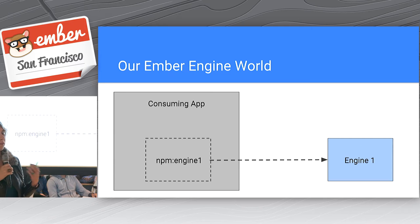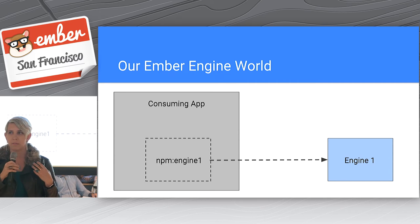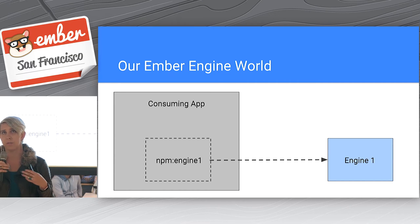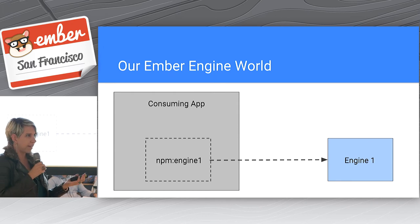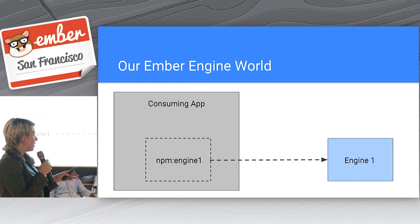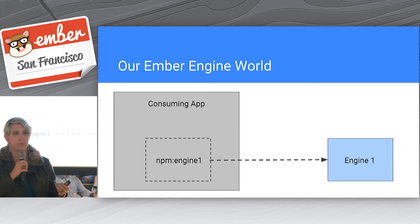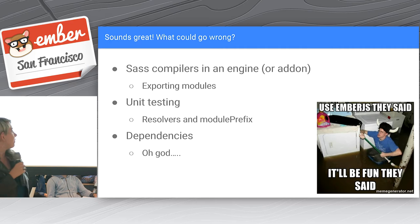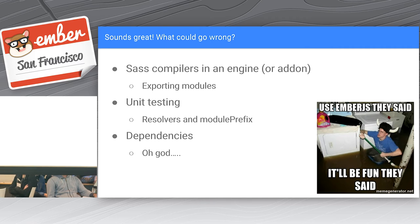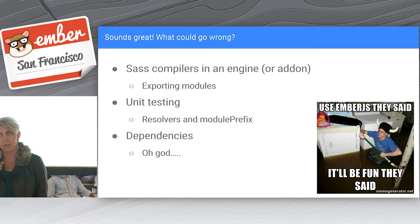For context, Engines can be within their consuming app or outside. For my specific Engine, we are outside of the consuming app. We are two different code bases entirely, and so our consuming app just pulls us in like any other add-on. We've worked with add-ons before. We are comfortable pulling in Ember add-ons. What could go wrong? Well, it turns out a couple things. They're not entirely just like add-ons.